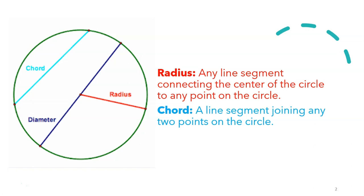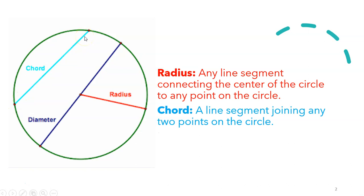Chord. A line segment joining any two points on the circle. So this particular blue colored line segment — this is a chord. It's a line segment joining any two points on the circle.